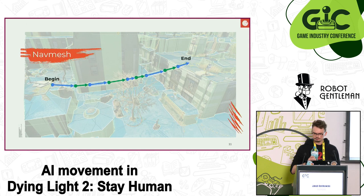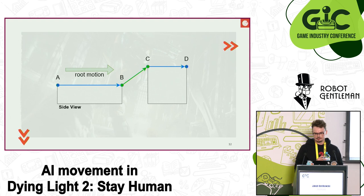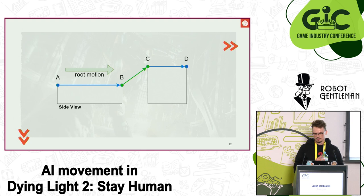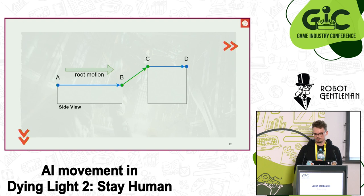Since the system is animation driven, we need to play animations to move. As you may know, animations can store displacement data for the character — this is called root motion. But to traverse a complicated obstacle course, we need to know more about the characteristics of that root motion: how fast the animation moves, whether it turns, and how high a jump goes.